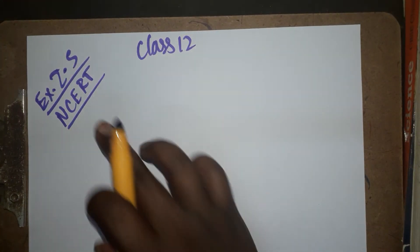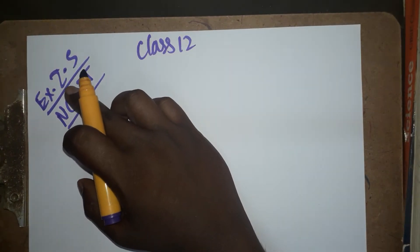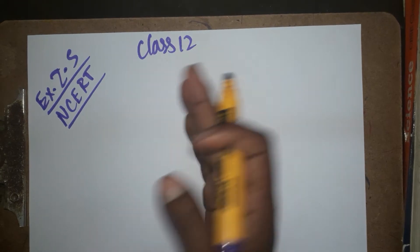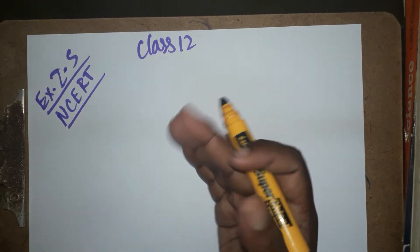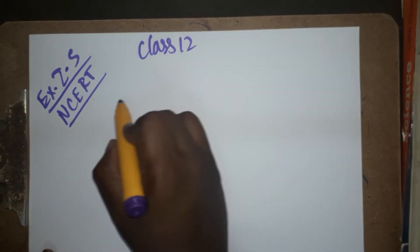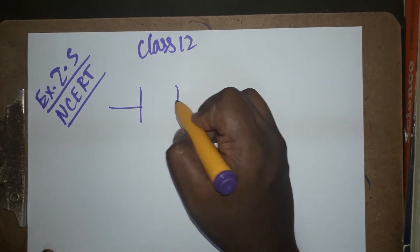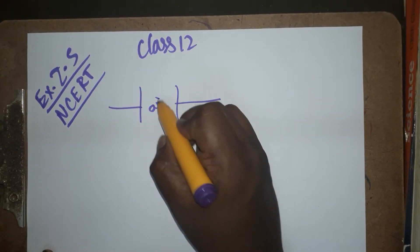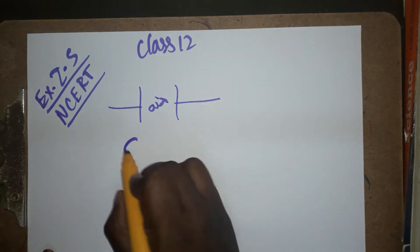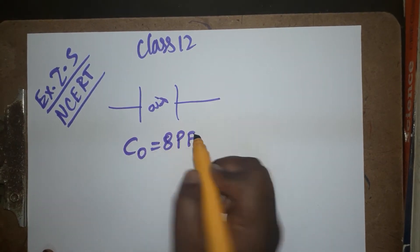Today we are going to learn the second chapter book back exercise problem 2.5, which is Physics Chapter 2, Class 12. The first situation given: there are two capacitors. In the first situation, the medium inside is air, and the capacitance is 8 picofarad.